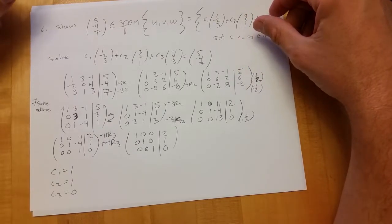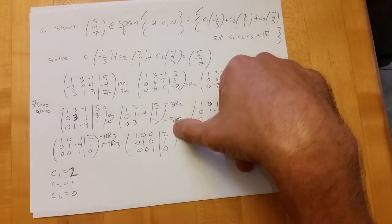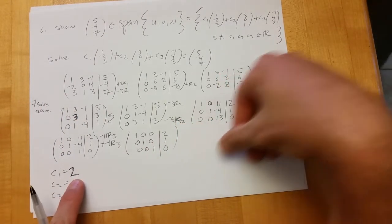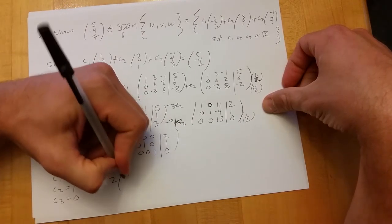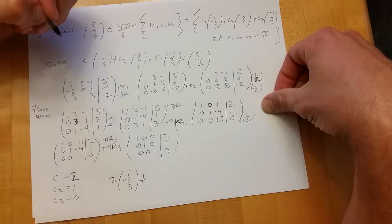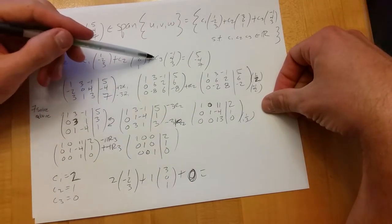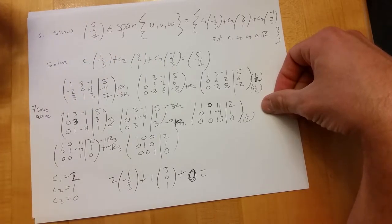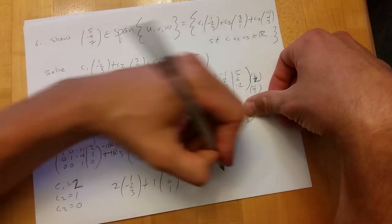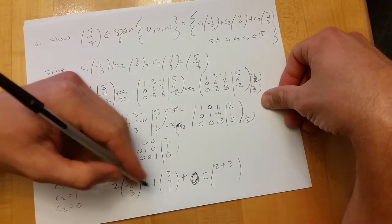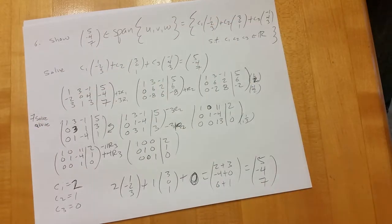Let's plug back in. C1 is 2, C2 is 1, C3 is 0. So we do 2·(1, -2, 3) + 1·(3, 0, 1) + 0·(-1, 4, 3). The zero coefficient gives a zero contribution. So we get: 2 + 3 = 5, negative four plus zero = negative four, six plus one = seven. So we get (5, -4, 7). There we go — we verified it. That was number seven.